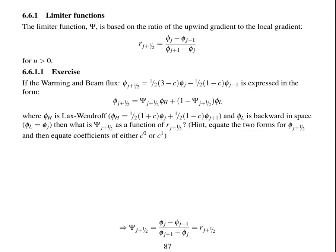As an exercise, we're going to consider the Warming and Beam scheme, which has φ_{j+1/2} equal to this. If I'm going to express this as a weighted sum of a high order flux and a low order flux, I would like you to find what the limiter function Ψ should be.